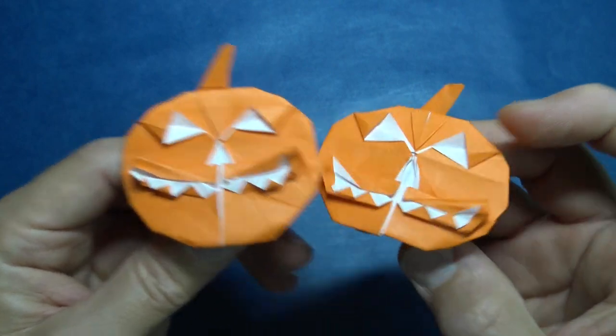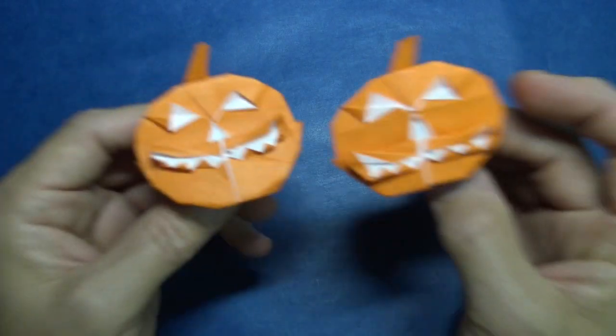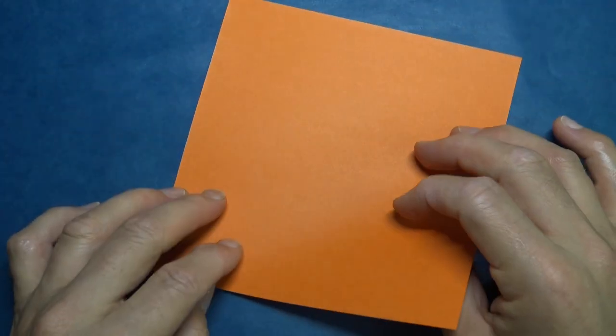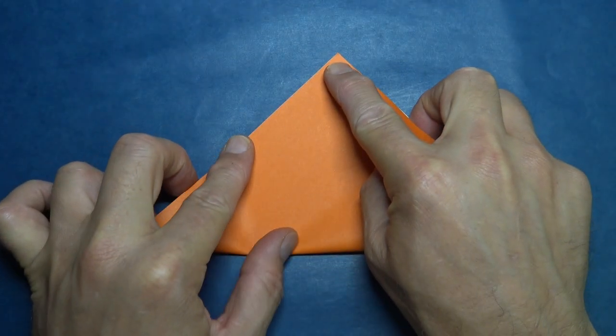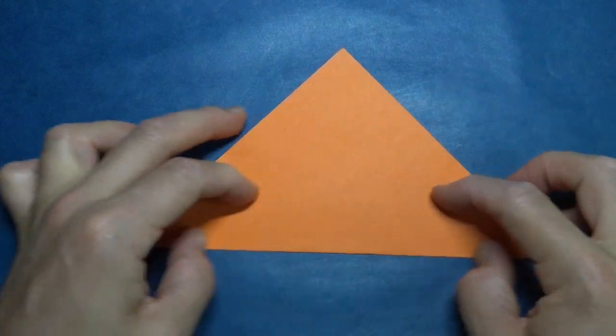Ready, set, here goes. For this model, I'm going to use a six inch square. Begin white side up and fold diagonally in half, trying to make really precise folds and crease sharply.